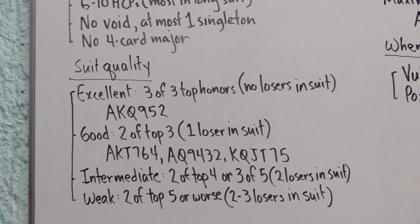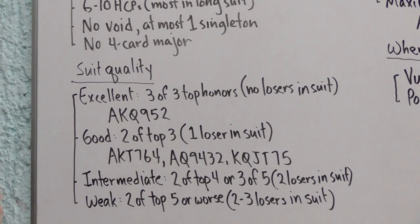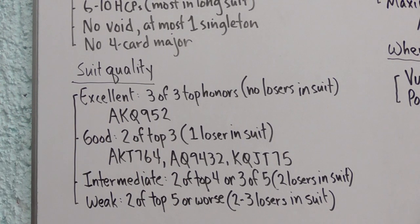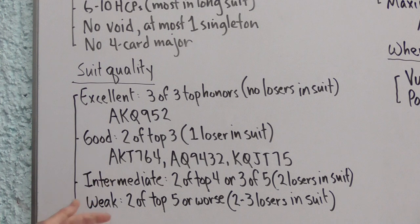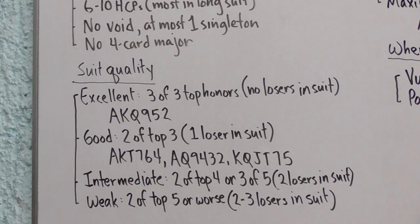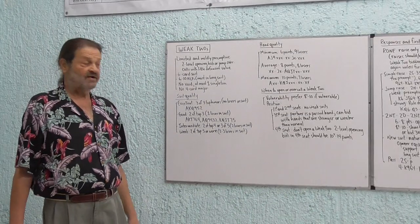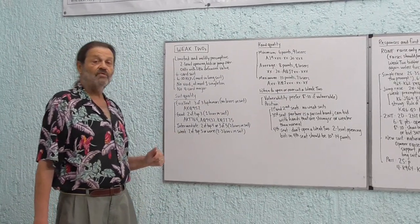An intermediate suit is slightly worse than this. It would be two of the top four honors or maybe three of the five, so there's going to be two losers in the suit. And then finally the weak suit, two of the top five honors or maybe even worse than that, meaning there's two or three losers in the suit. Would you open a weak two with a suit headed by the jack? Well if you would, you would call that a weak suit.